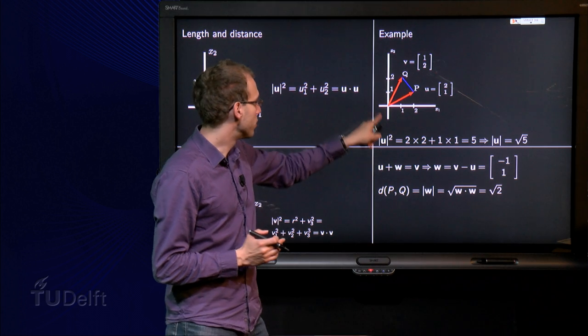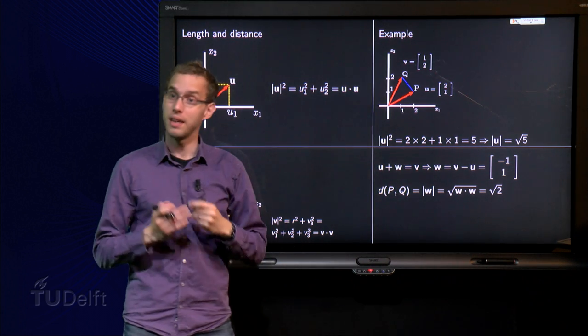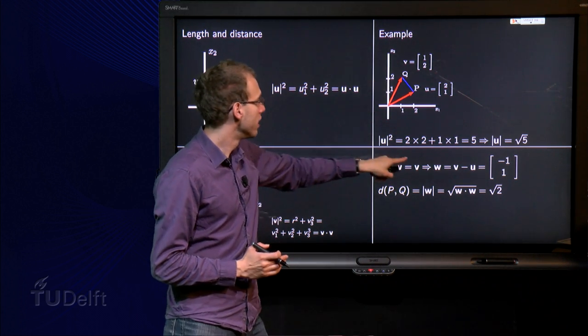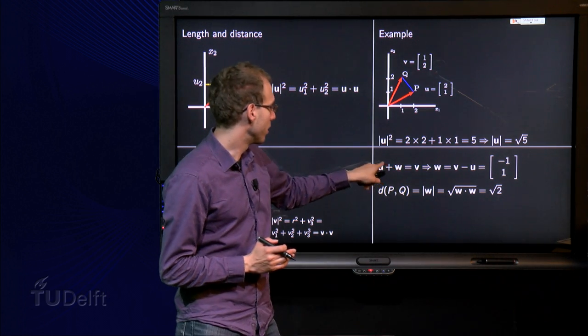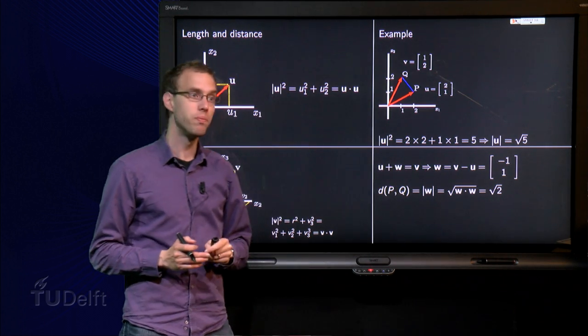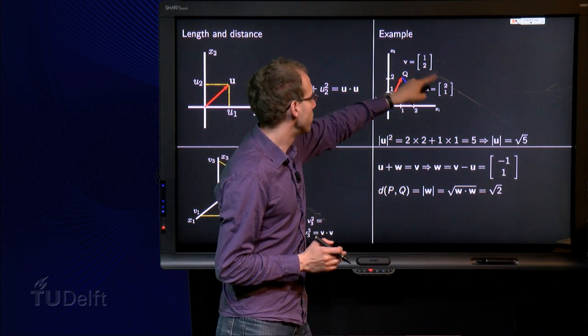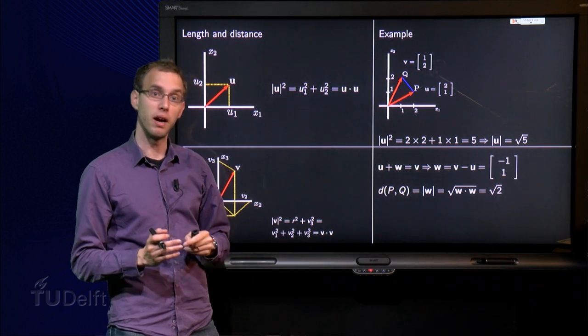Well, we see u plus w then we get to v. So we can solve for w. w equals v minus u, and v minus u is (1, 2) minus (2, 1) equals (-1, 1) over there.